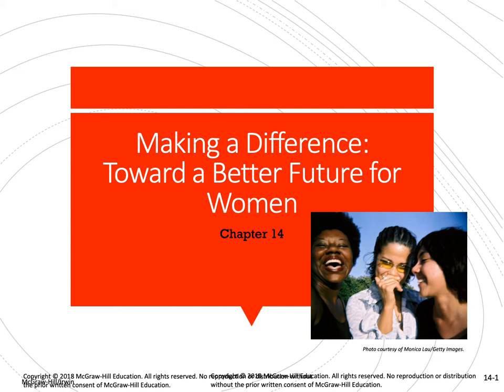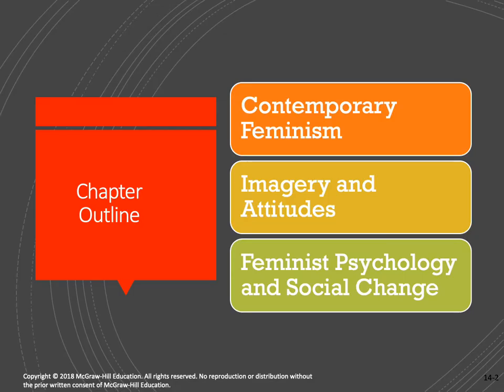For example, in the workplace younger women may be feeling the impact of the wage gap, while older women may be fighting against the double standard of aging. So they have different needs that need to be addressed. Diversity on many factors is very important for the women's movement to continue to be successful for all women. In terms of an outline, this chapter covers contemporary feminism, images of feminism and attitudes towards it, and feminist psychology and social change.